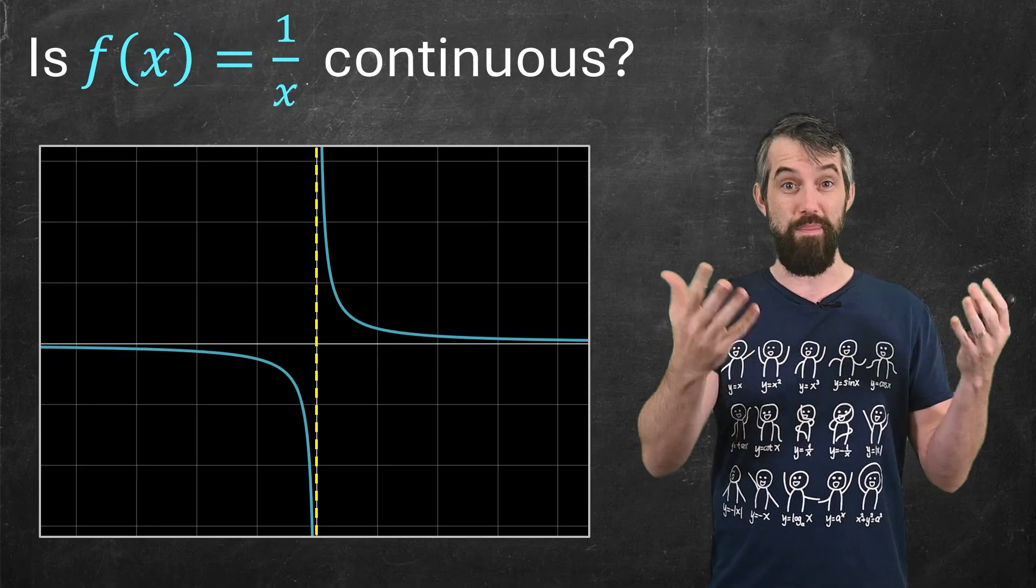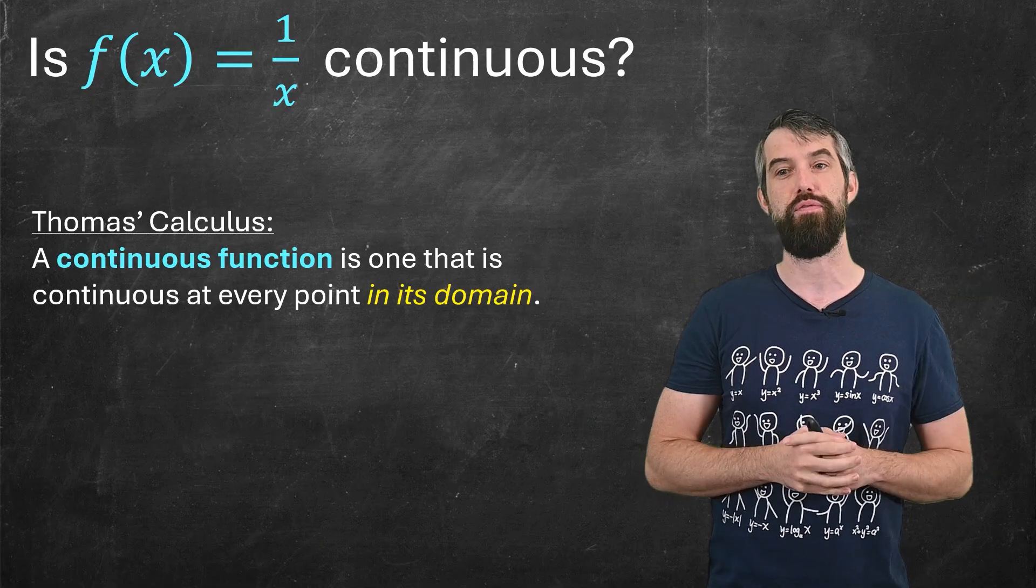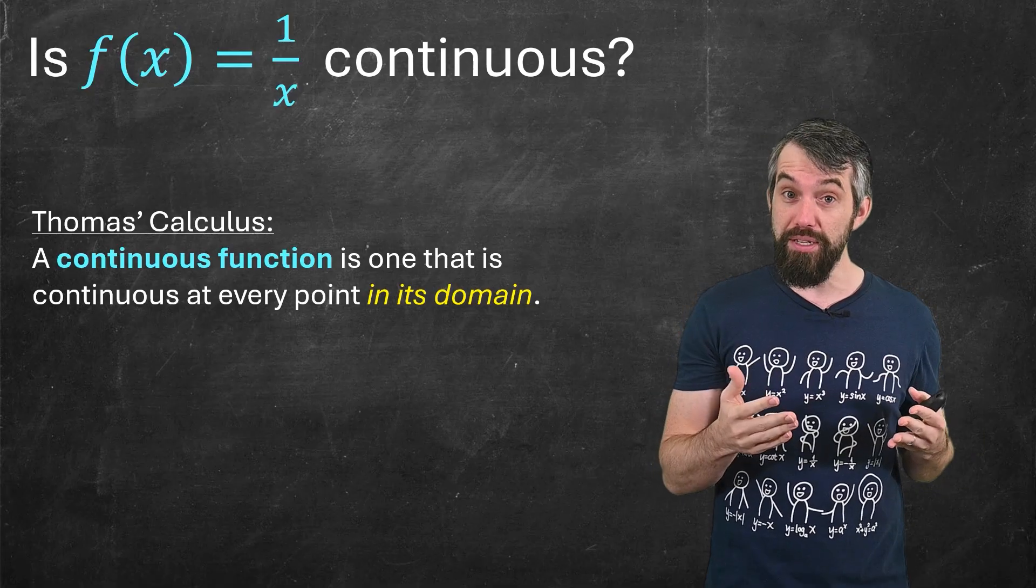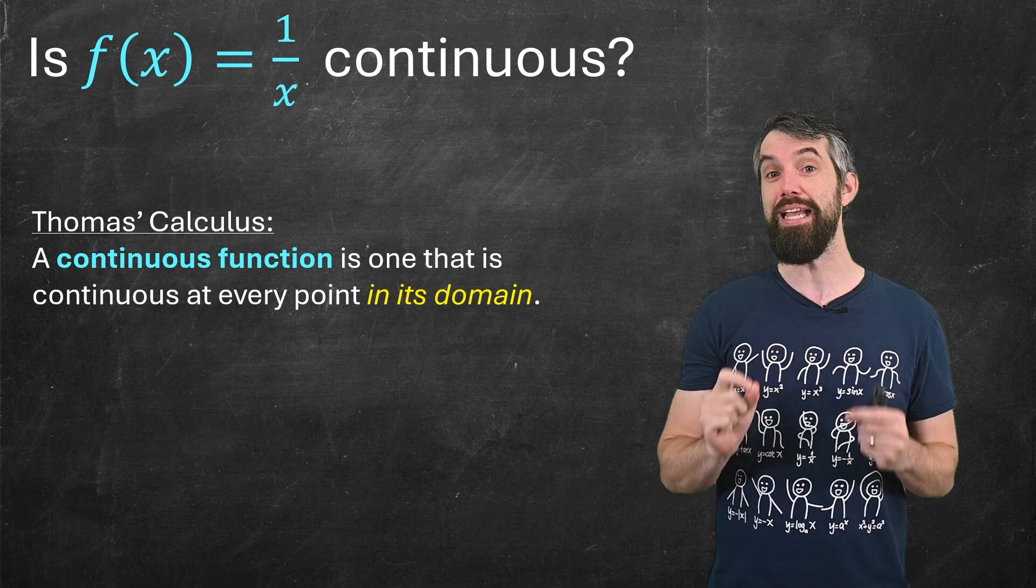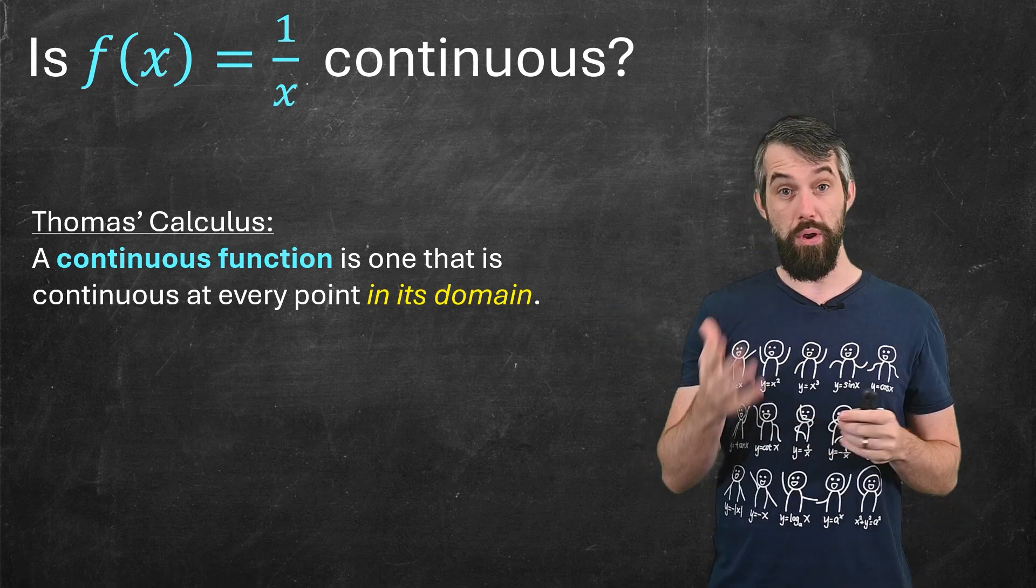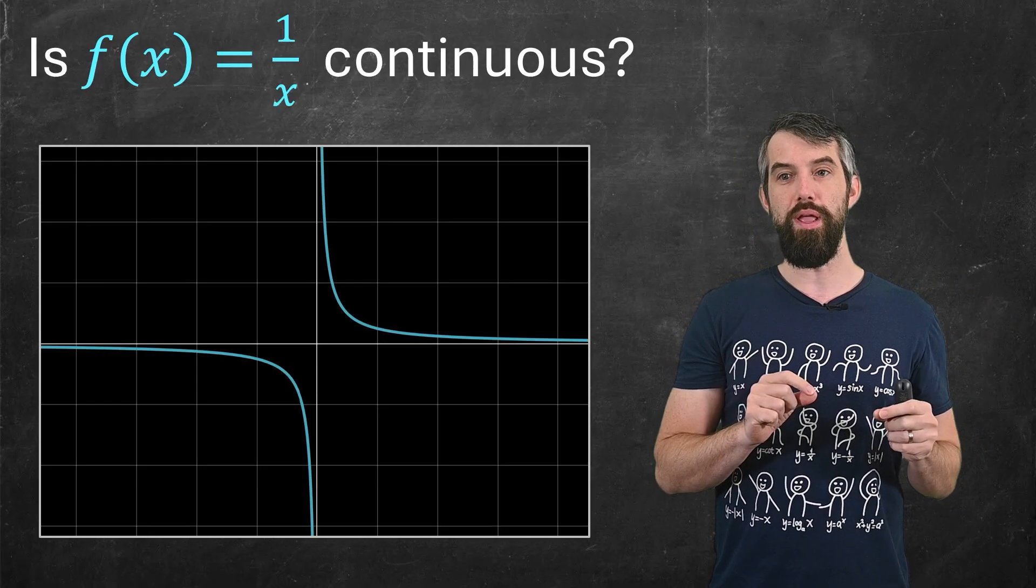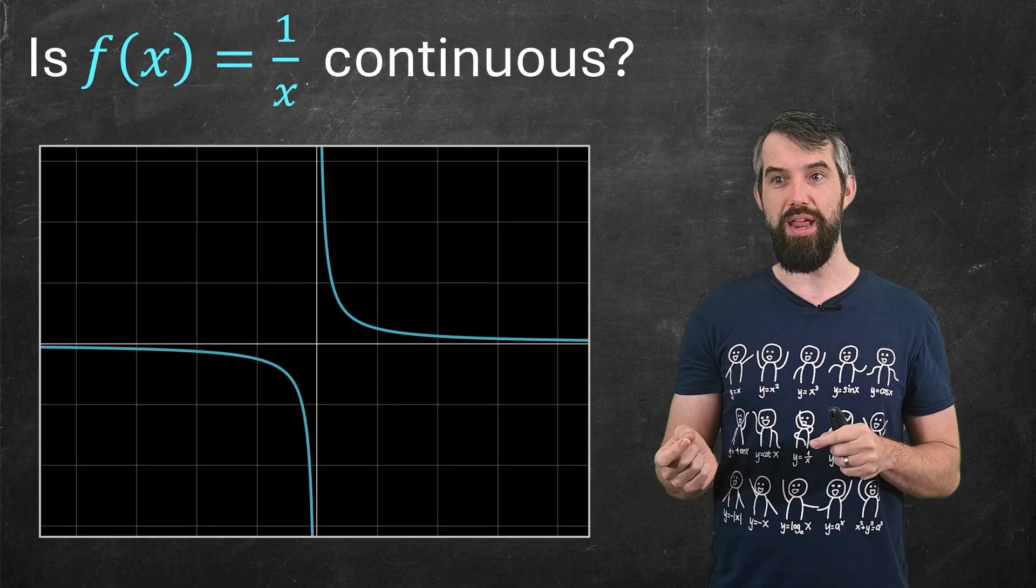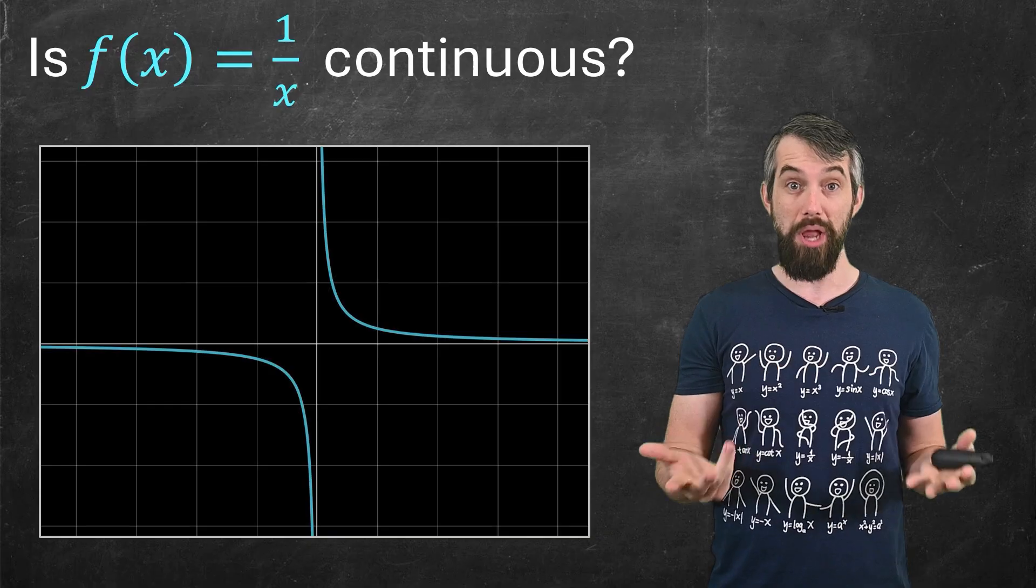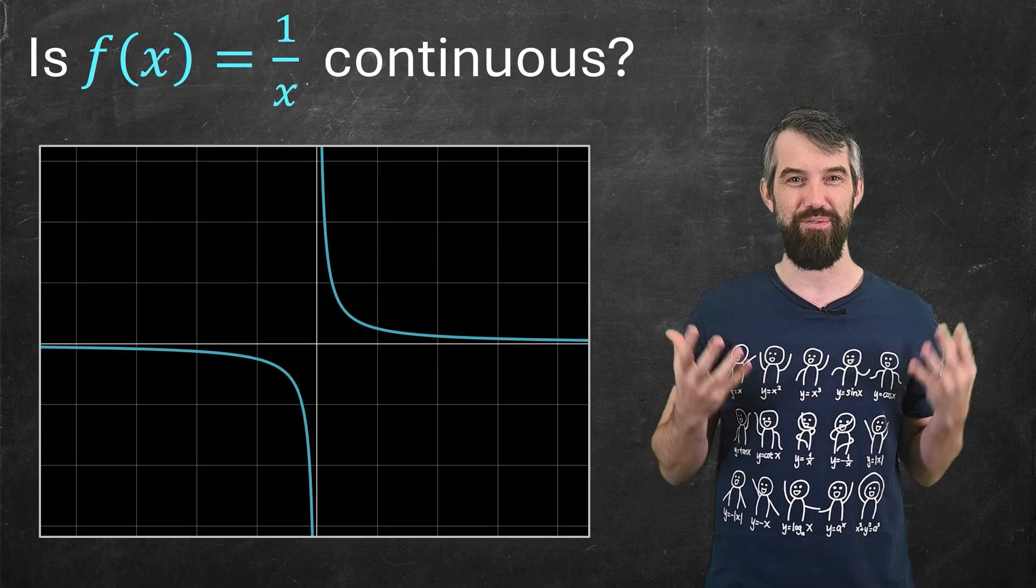If I go to, say, one of the big calculus textbooks, Thomas's Calculus, a standard book I use at my university, it defines a continuous function as one that is continuous at every point, and here's the catch, in its domain. Zero isn't in the domain of 1 over x. 1 over zero is not defined. There's no controversy about that. And so, if I look at the graph again, in all the spots where it's defined, that is where x is not equal to zero, the function is perfectly continuous. And thus, it is a continuous function.